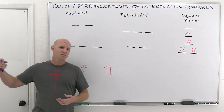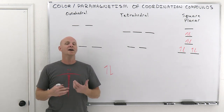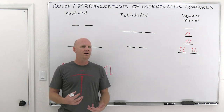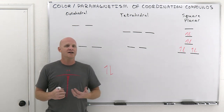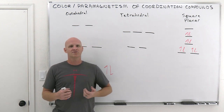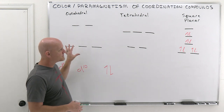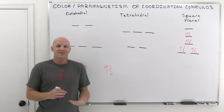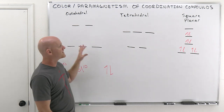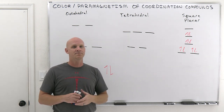A paramagnetic substance moving through a magnetic field is going to experience a slight attraction — the more paramagnetic it is, the more attraction it feels. On the other hand, if all the electrons are paired up, we refer to it as being diamagnetic. Instead of a slight attraction, it's going to experience a very slight repulsion. So you're going to look at the number of d-electrons, fill them into one of these diagrams depending on what kind of complex you have, and figure out: do I have unpaired electrons? If yes, it's paramagnetic. If no, it's diamagnetic.